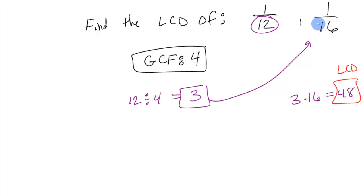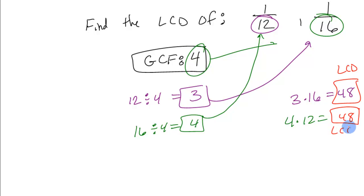Now what happens if you did it the other way? Let's say I choose the 4 but I divide it out of the 16. So this time I divide it out of 16. 16 divided by 4 equals 4. This time we multiply times the 12. 4 times 12 is 48. Again, the LCD.